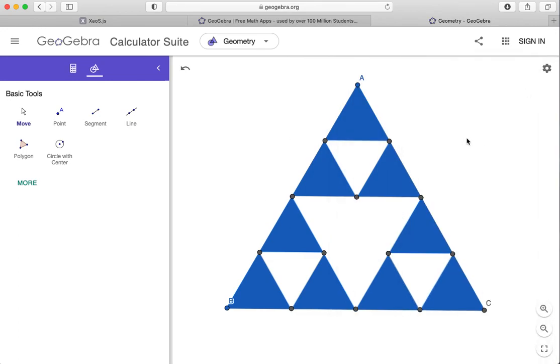There we go. All right, you can repeat this process again on each of these little blue triangles. And you can keep going as many times as you want to try to get a figure that looks like the Sierpinski triangle that we had on the slide.